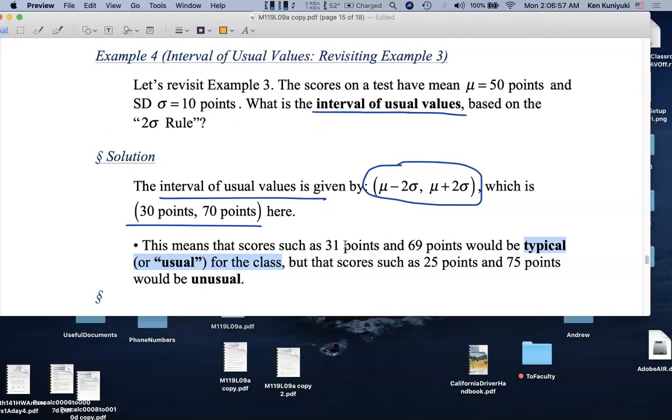Granted, you may not be thrilled by the 31 points, but it is in the typical or usual range. Whereas something like 25 points would be unusually low, 75 points would be unusually high.